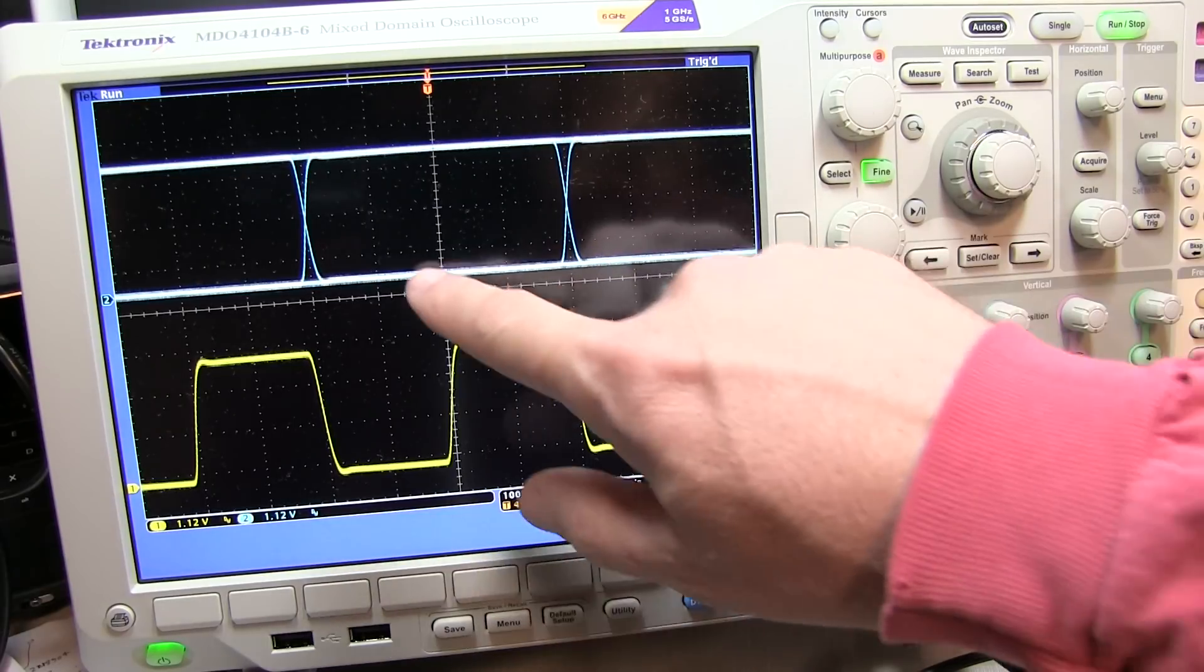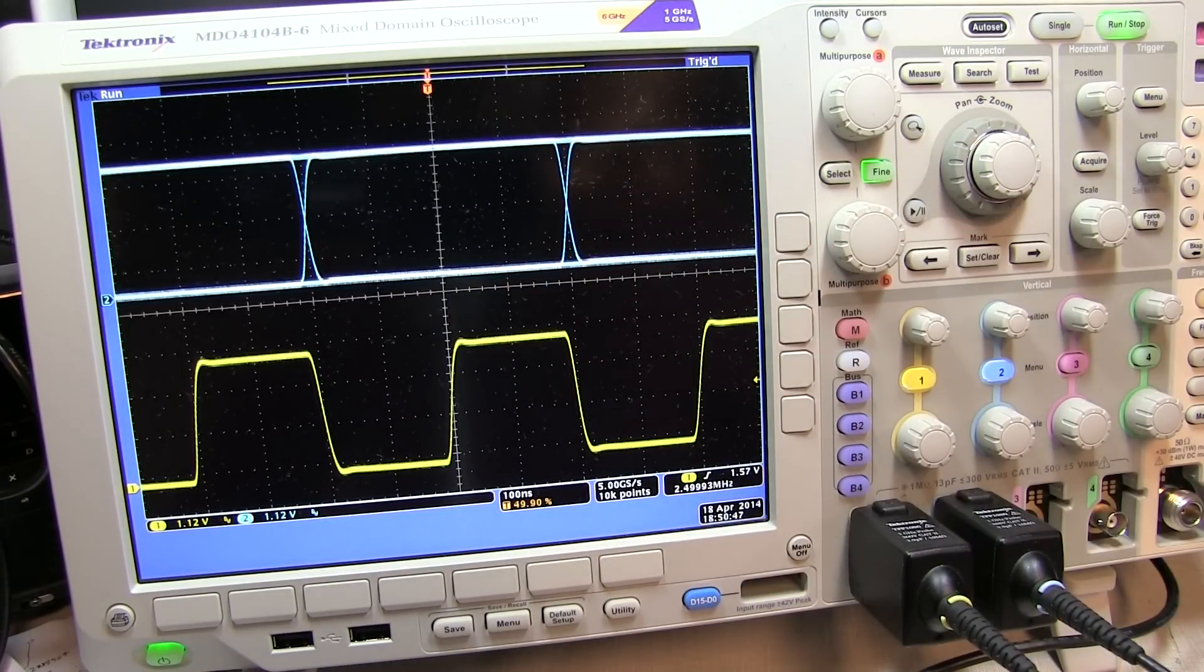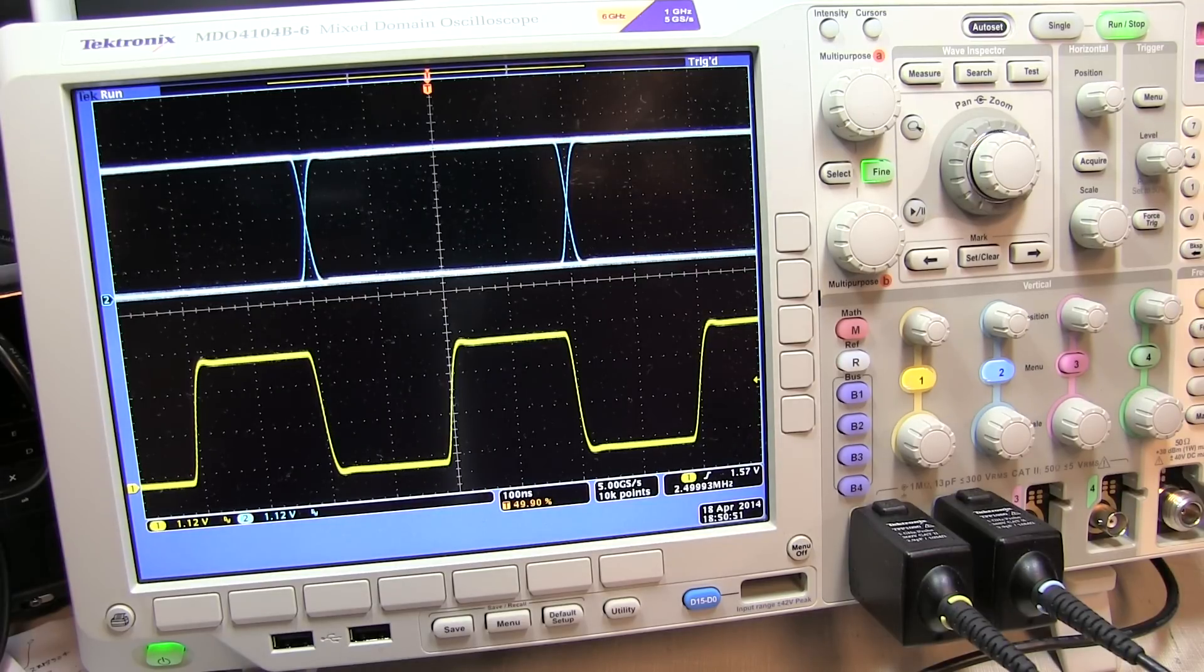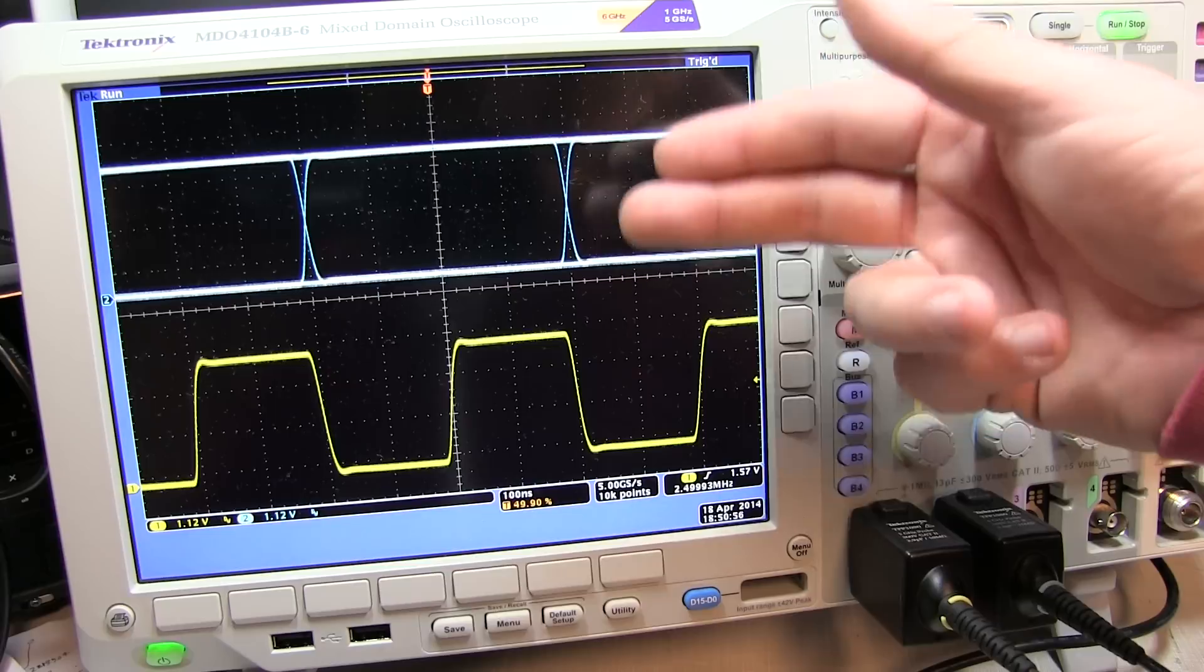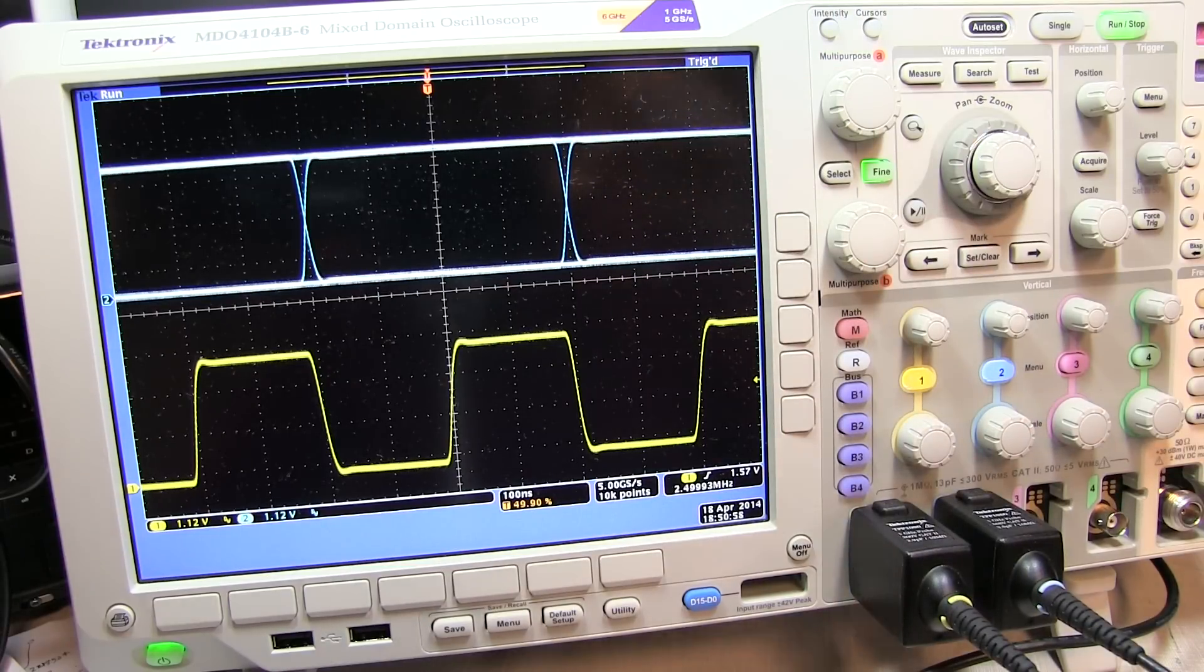Now an eye pattern, which is this display here on channel 2, is a way of viewing the quality of a serial bitstream. And it does so by essentially laying a number of bits all on top of each other. So let me show you what I mean by that.